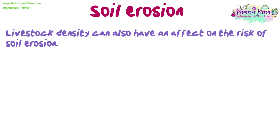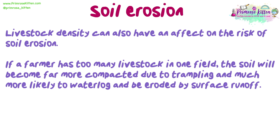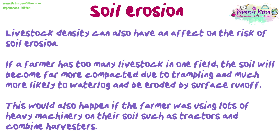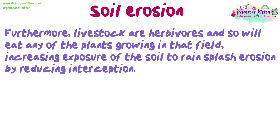Livestock density can also have an effect on the risk of soil erosion. If a farmer has too many livestock in one field, the soil will become far more compacted due to trampling, and much more likely to waterlog and be eroded by surface runoff. This would also happen if the farmer was using lots of heavy machinery on their soil, such as tractors and combine harvesters. Furthermore, livestock are herbivores and so will eat any plants growing in that field, increasing exposure of the soil to rain splash erosion by reducing interception.